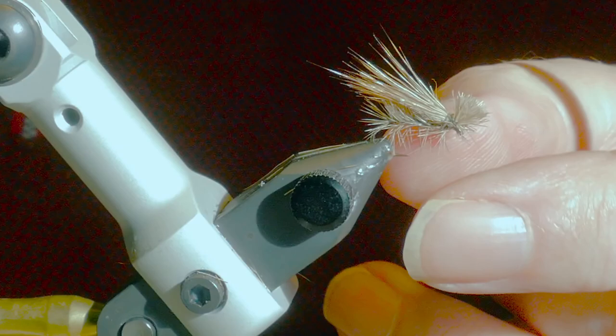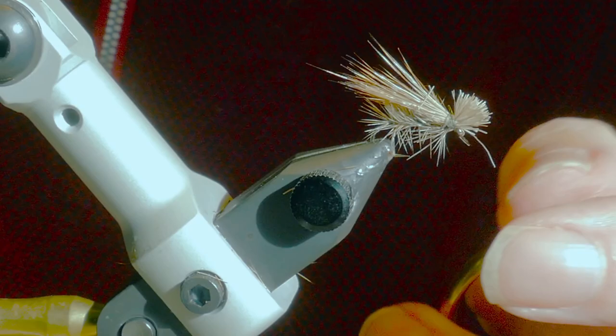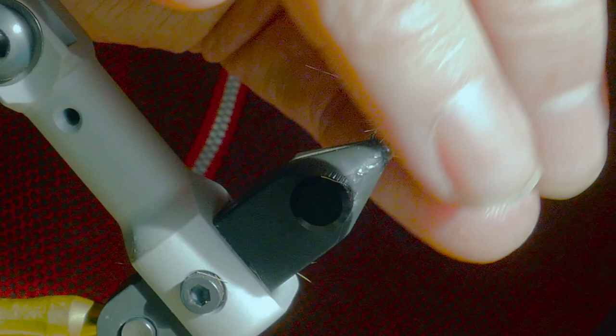Now this fly fished on the top dropper on locks or as a single fly on rivers when the sedges are out does the job.